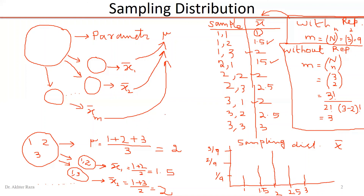In this example we chose a very small sample of size 2, but we can see that the sampling distribution of the mean looks like a symmetrical distribution. This symmetry is one of the very important characteristics of the sampling distribution, and whenever we cover the characteristics of the sampling distribution, this will be our focus.